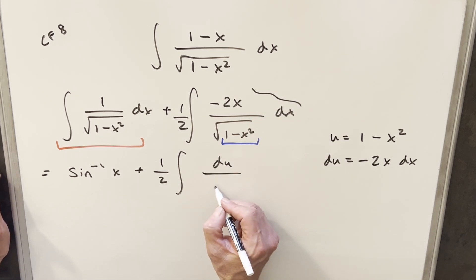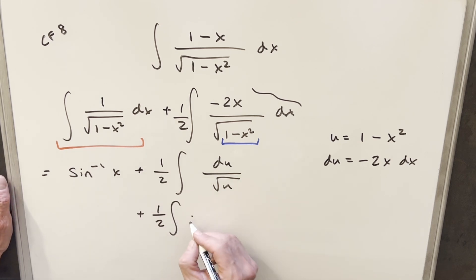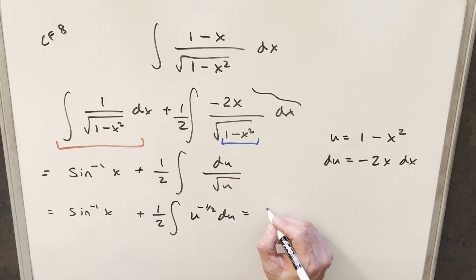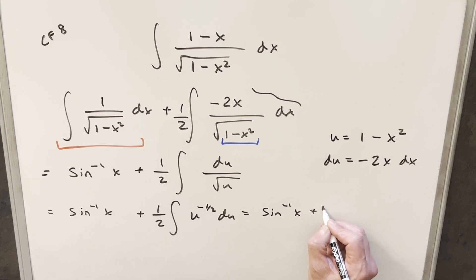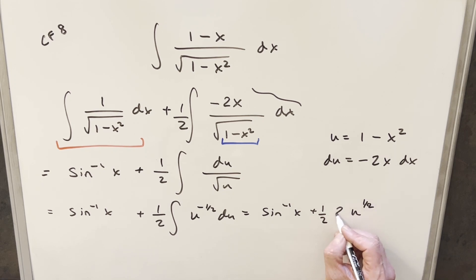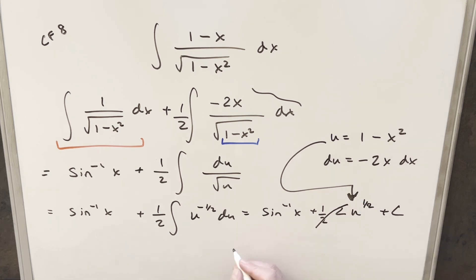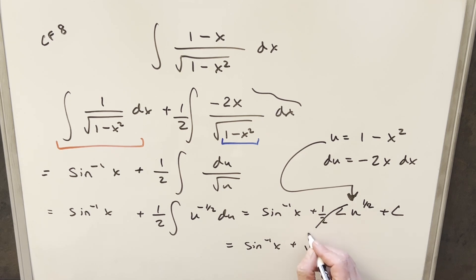We have this one half, and this here is exactly our du, so we're going to have du over the square root of u. To set up the power rule, I can rewrite this as u to the minus one half du. Integrating with the power rule gives u to the one half, then we want the reciprocal of the exponent, which is just two — but that cancels with the one half. Then to finish it off, we back-substitute our u value, giving us arcsin of x plus the square root of one minus x squared, plus C.